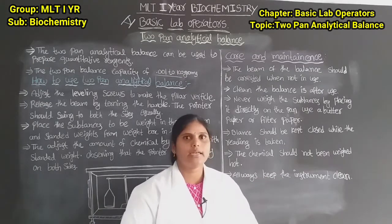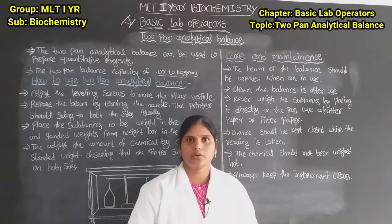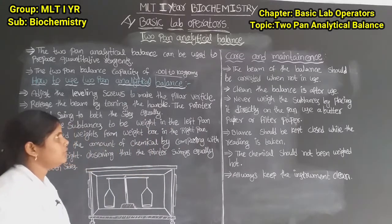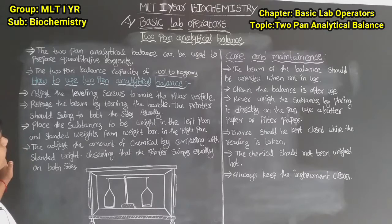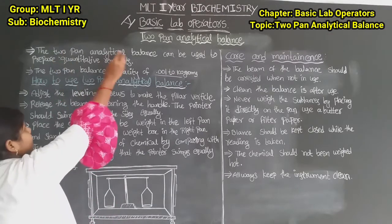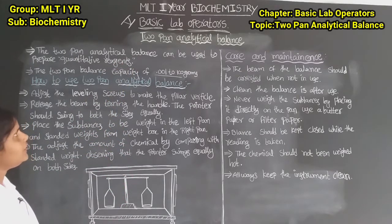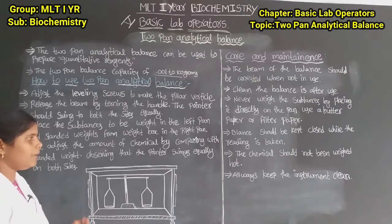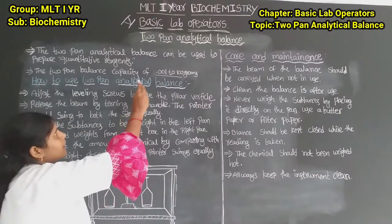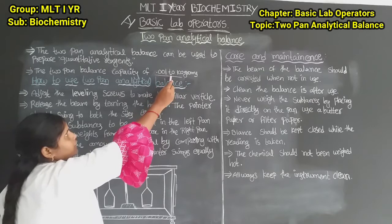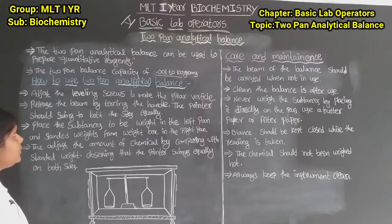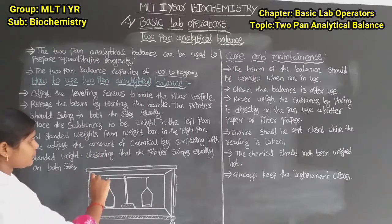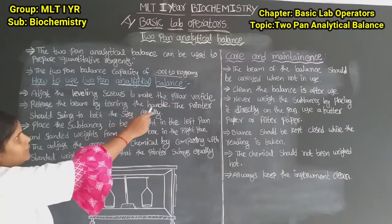Always keep the instrument clean. This is the two pan analytical balance, also called the double pan analytical balance. Its capacity is 0.001 to 100 grams. To use it: first, adjust the leveling screws to make the pillar vertical.